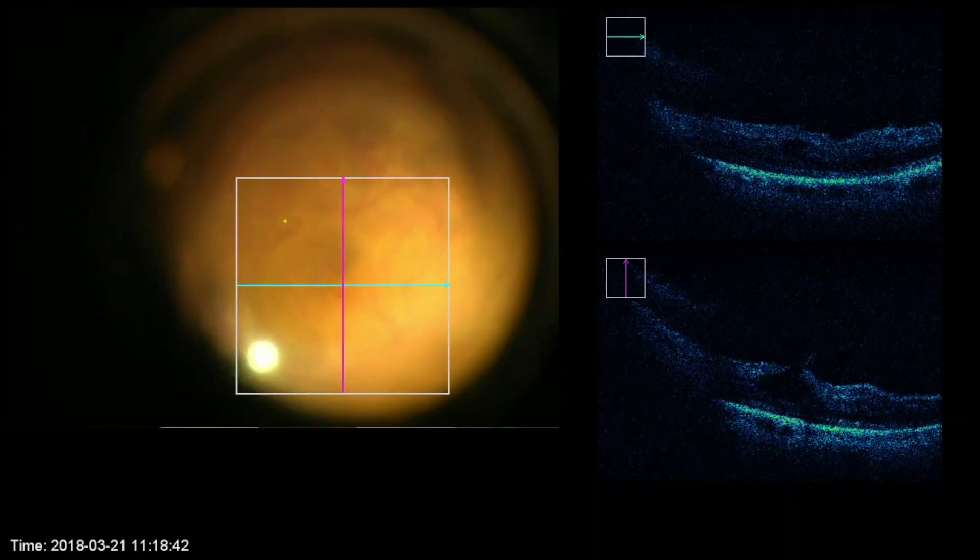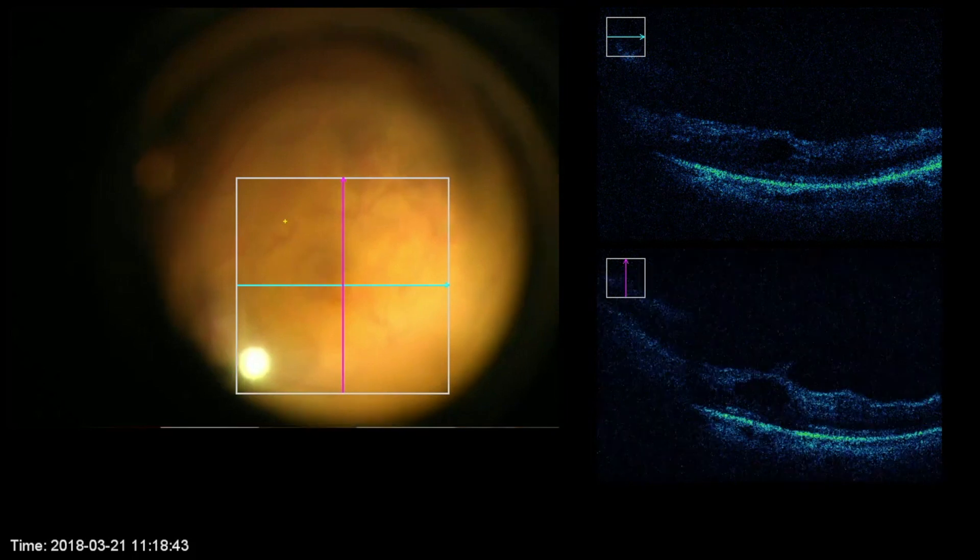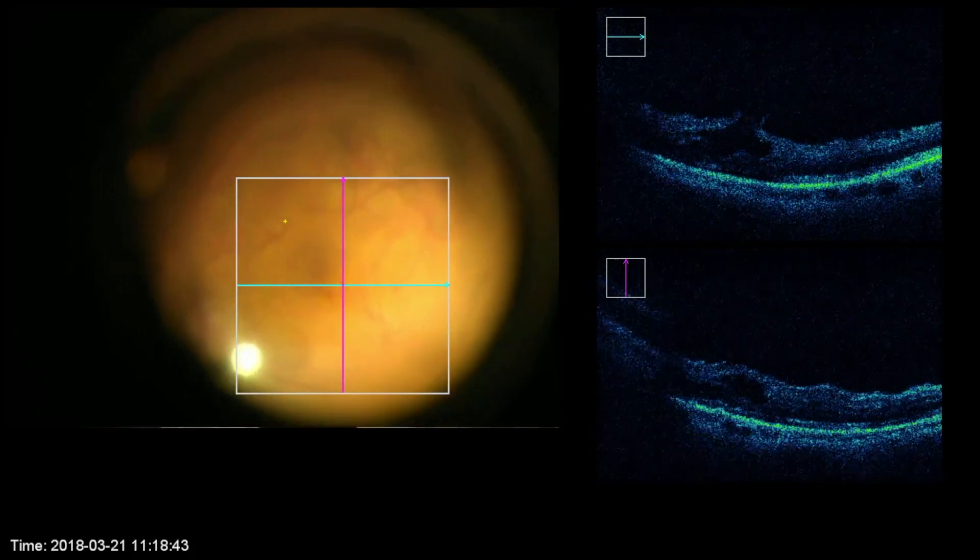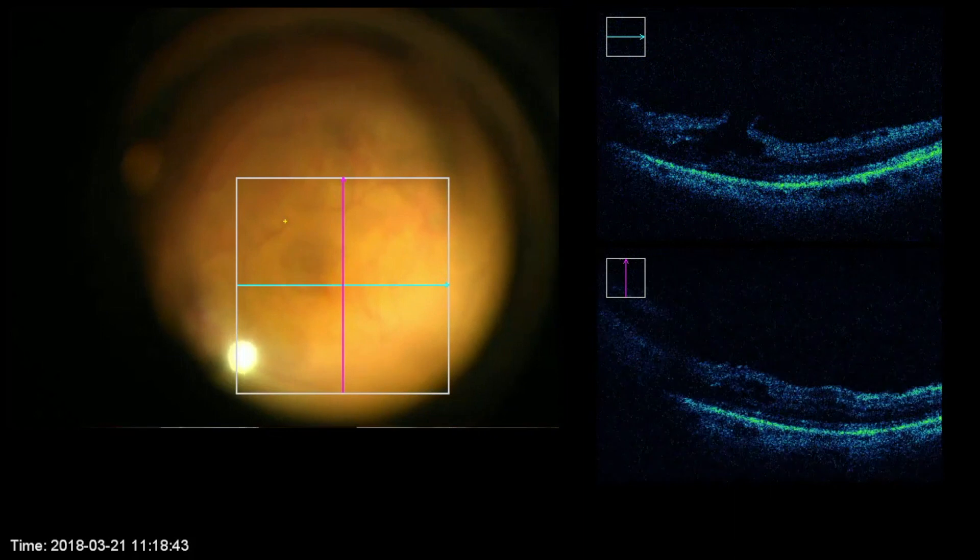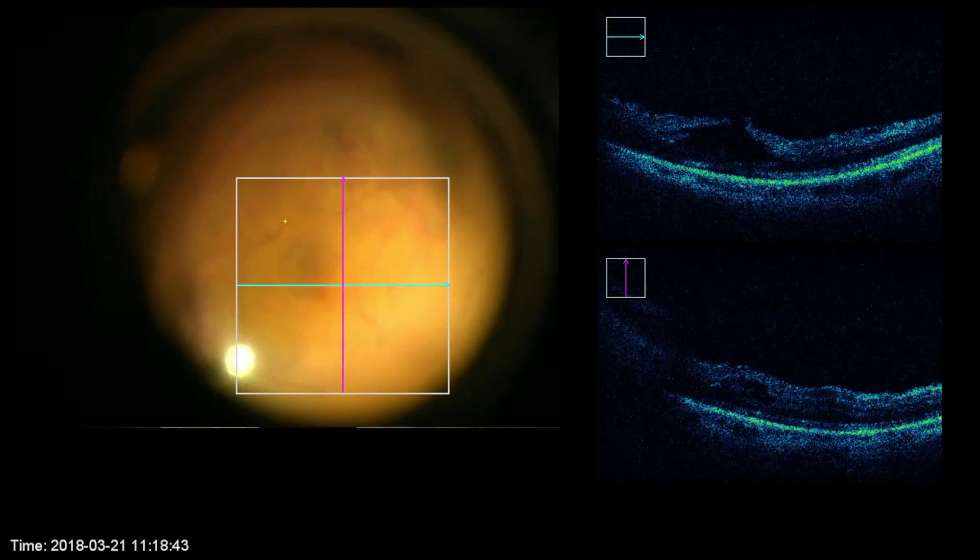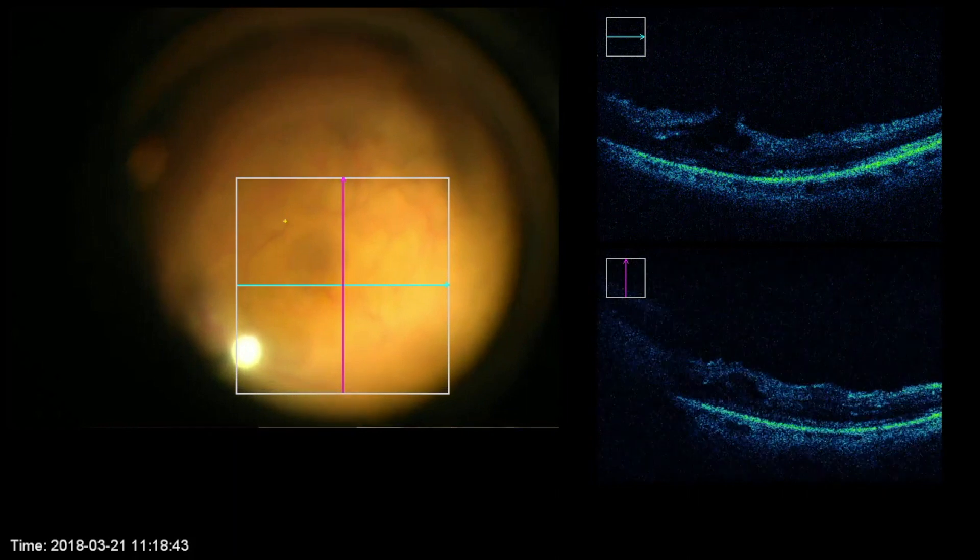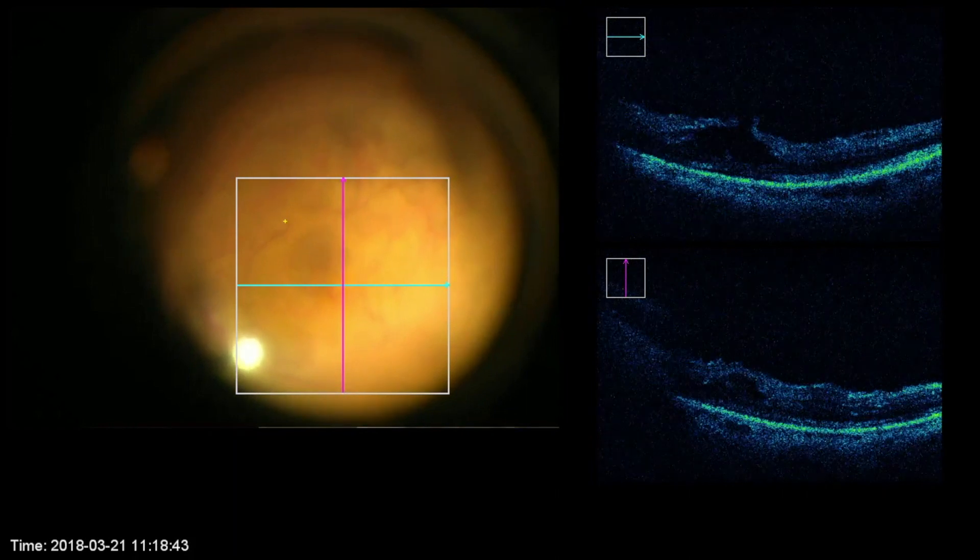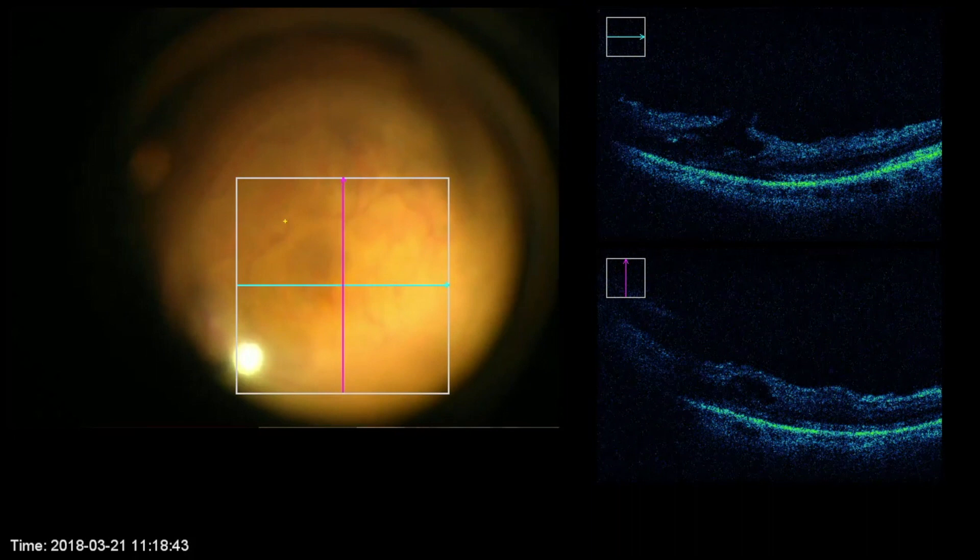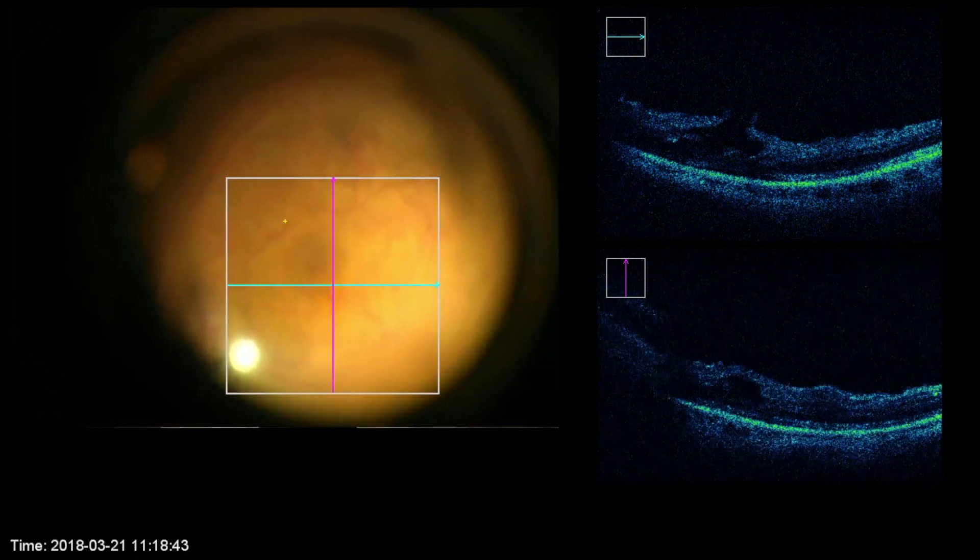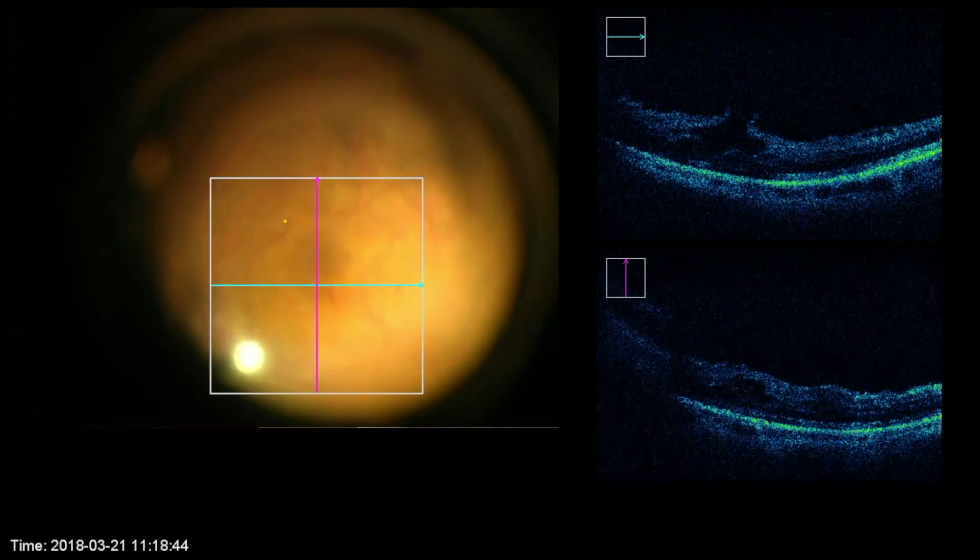This is the intraoperative OCT and the appearance was very satisfactory. Not significant traction remaining and in this case, I would not peel the ILM and that's usually what I do in most cases. If there's no significant traction, I prefer to leave the ILM alone. I think less is more and the ILM is there for a purpose. I don't like the appearance after ILM peeling with the retina being very thin.